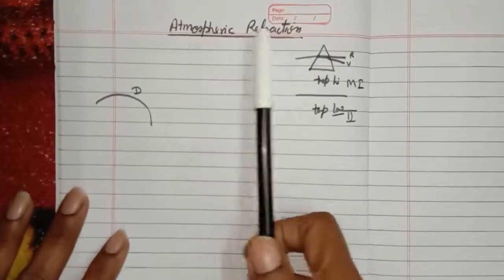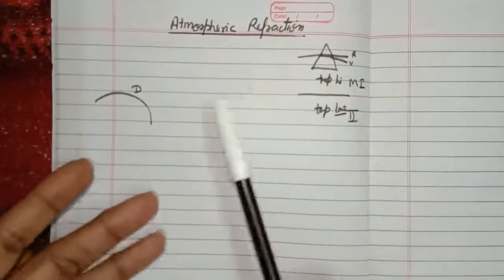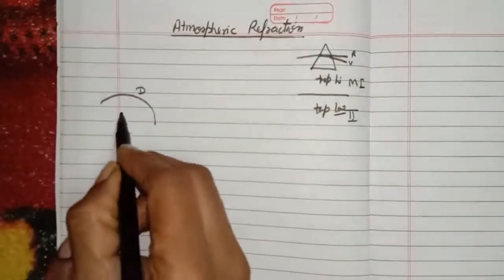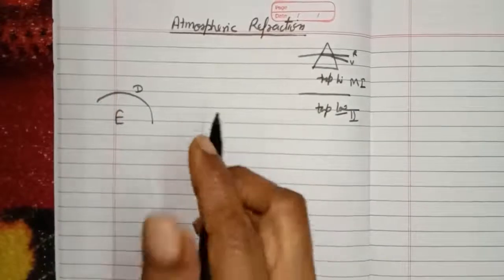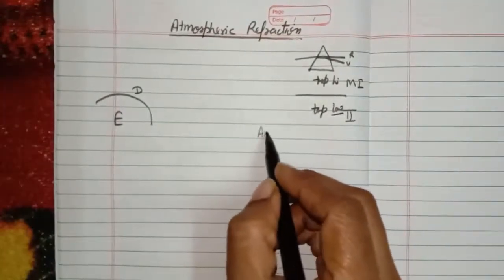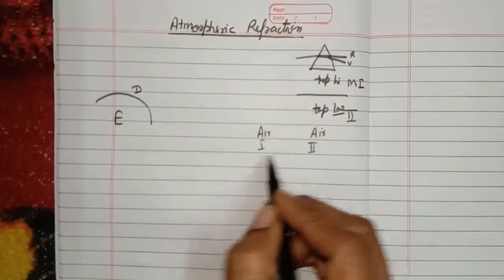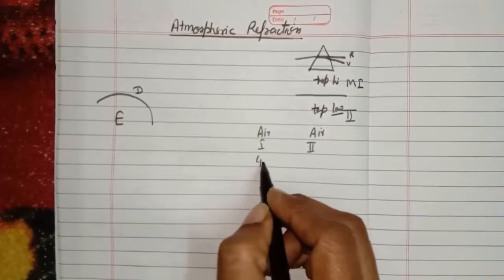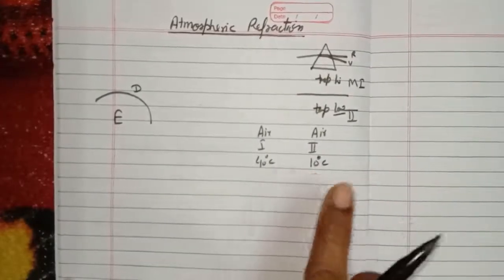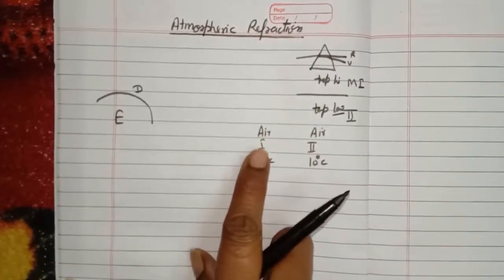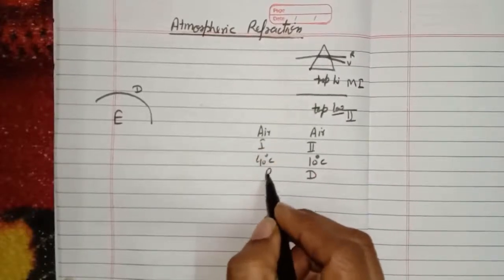But actually, refraction of light does take place in the atmosphere, and I will explain how and why. Suppose these are two air samples — Air 1 and Air 2. Air 1 has a higher temperature, say 40°C, and Air 2 is cooler, say 10°C. Since both are made of the same composition, the air with lower temperature will be denser and the air with higher temperature will be rarer compared to the other.